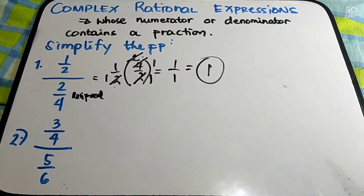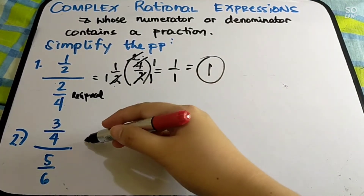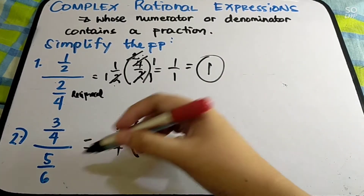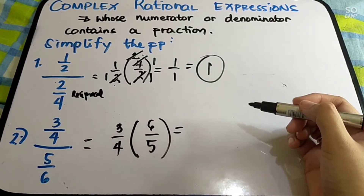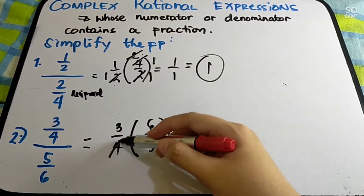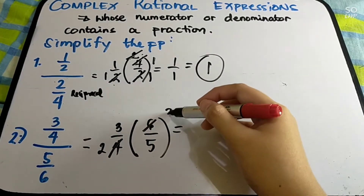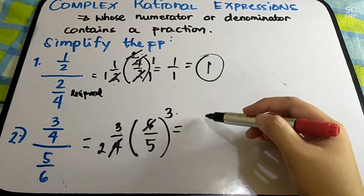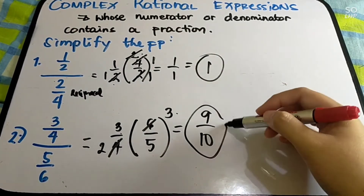That is it — that's when it's just simple fractions with no algebraic expressions. Another one: we have 3 fourths over 5 sixths. Find the reciprocal of the denominator, which is 6 over 5. Then checking up and down, 4 and 6 are divisible by 2 — 4 becomes 2, 6 divided by 2 is 3. Then multiply: 3 times 3 is 9, over 2 times 5 is 10. So your answer is 9 over 10.